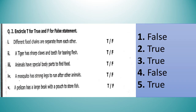Question number two: Circle T for true and F for false. First, different food chains are separate from each other — False. Second, a tiger has sharp claws and teeth for tearing flesh — True. Third, animals have special body parts to find food — True. Fourth, a mosquito has strong legs to run after other animals — False. Fifth, a pelican has a large beak with a pouch to store fish — True.